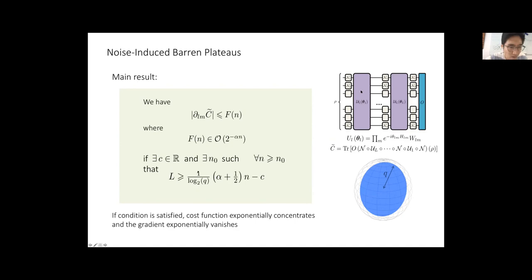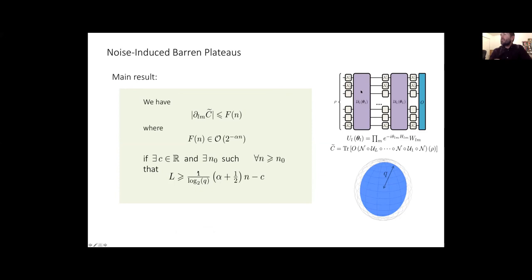A question asked whether there are lower bounds on circuit depth in the variational setting — for instance, whether combinatorial optimization might require at least K layers that exceed the depth allowed before barren plateaus. Patrick acknowledged there are results of this type, particularly for QAOA, where significant analytical progress has been made, though he didn't have the reference immediately at hand and offered to look it up.